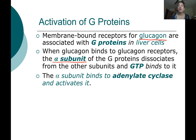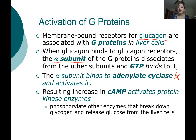After GTP binds to the alpha subunit, it then binds to adenylate cyclase and activates it. This whole cascade starts with glucagon binding to a receptor, which activates a G protein, causes the alpha subunit to break apart, and leads to activation of adenylate cyclase. That causes an increase in cyclic AMP, which activates protein kinase enzymes. This series of reactions leads to the breakdown of glycogen in the liver, causing the release of glucose from liver cells.